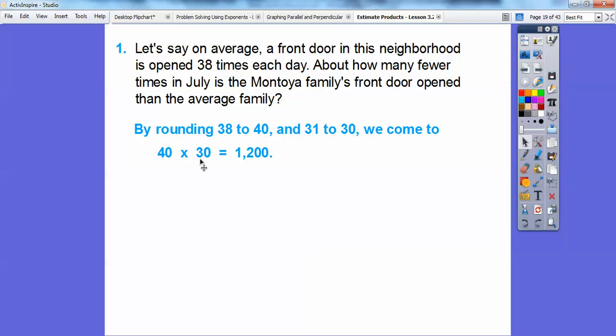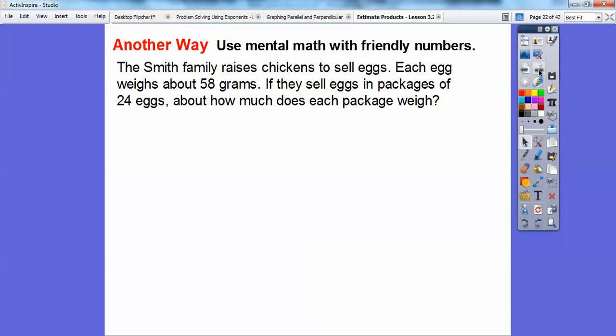4 times 3 is 12. And then so it's going to be 12 with these two zeros right here. So here's my 12 with two zeros, which is 1,200. So by subtracting 1,200 minus 900, we have 300. So there's about 300 fewer times Montoya opens their front door than the average family in the neighborhood.